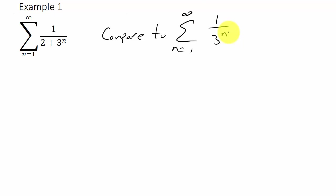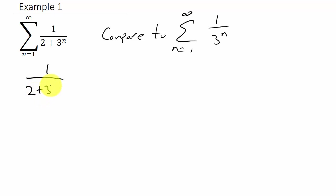What you can do is keep the larger term from the numerator and denominator. Here, 1 is the largest term in the numerator, and 3 to the n is the larger term in the denominator — so I'm just dropping off the 2. We can also see that 1 over (2 plus 3 to the n) is less than 1 over 3 to the n.